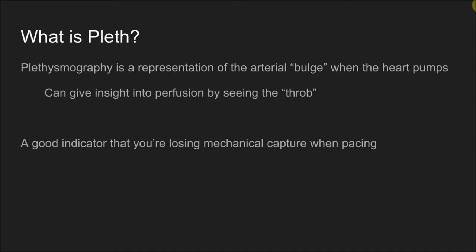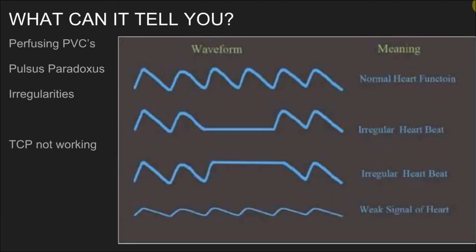It's a good indicator when you're losing mechanical capture. If you're pacing a patient and you begin seeing your pleth go down, that's a warning sign. It can also tell you if those PVCs are perfusing or not. That wavy line is not just a digital representation of what the monitor thinks is happening — if your patient has an intact vascular system, it actually senses that rush of blood. It can also help catch pulsus paradoxus, where a deep breath causes blood pressure to drop dramatically.